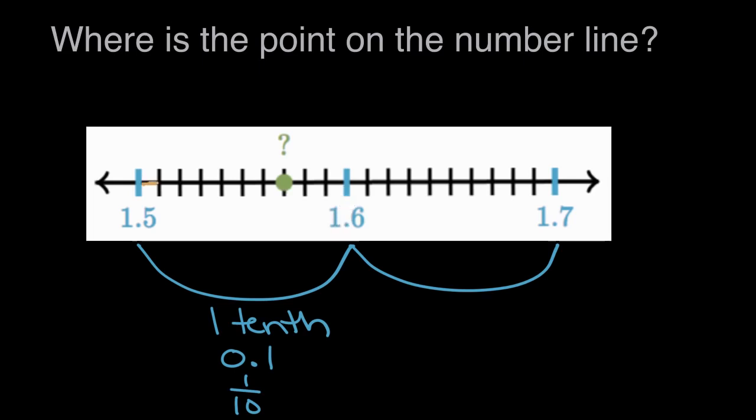So each of these little spaces is 1 tenth of this distance, because it's 1 of the 10 equal spaces. So this right here is a tenth of this tenth, because a large distance is a tenth, and this is 1 tenth of that tenth.